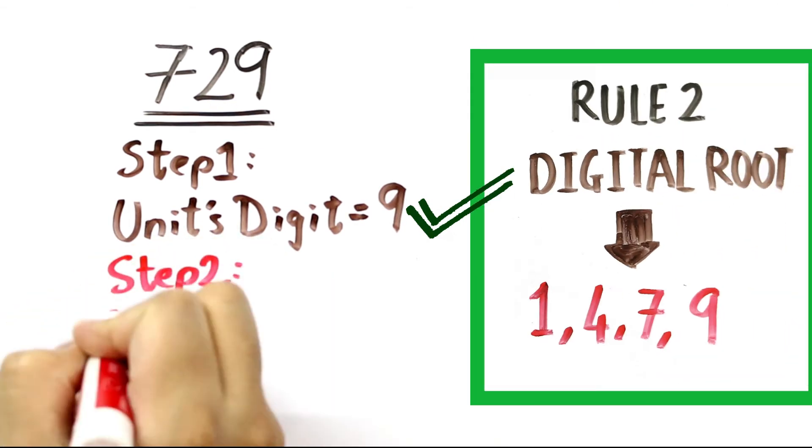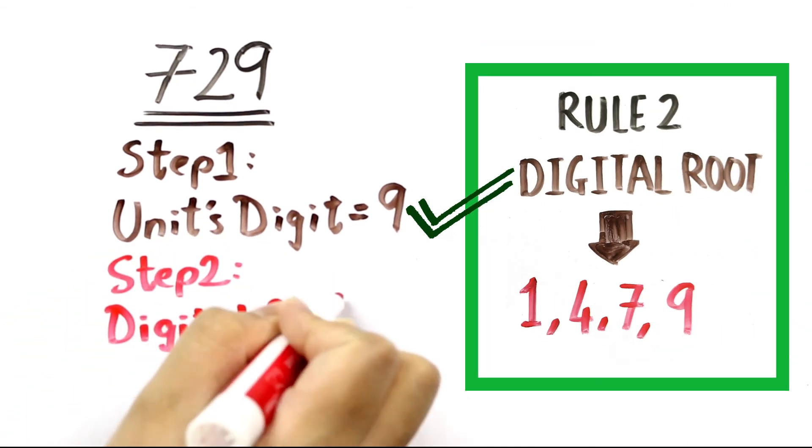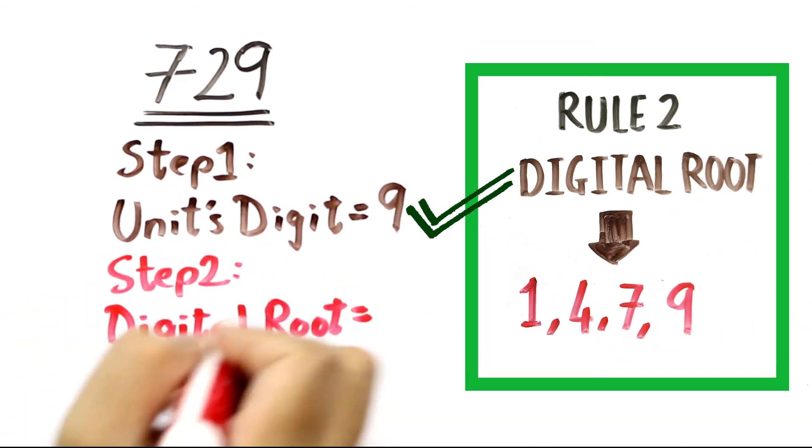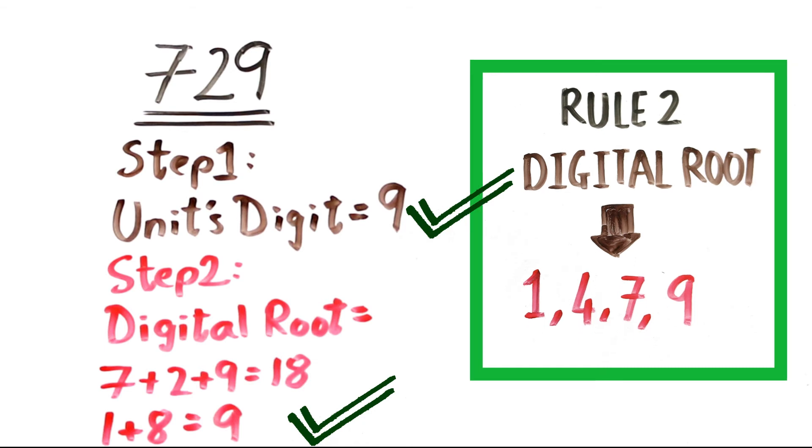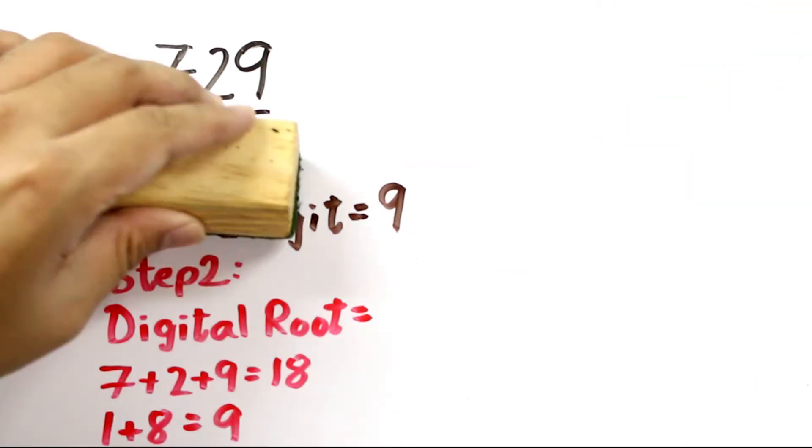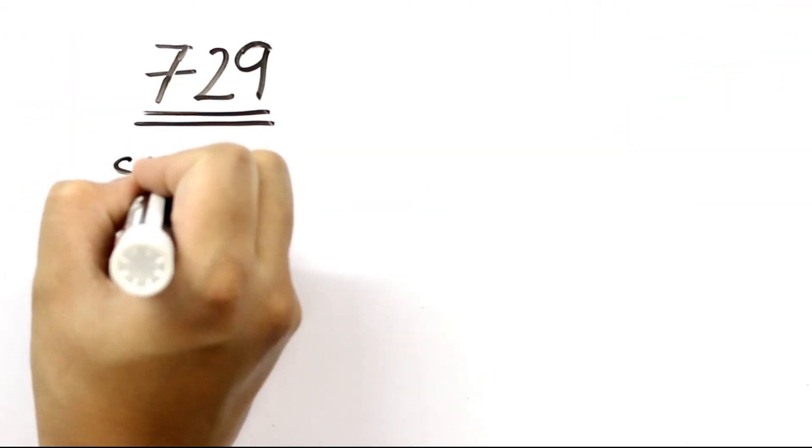Step 2 is to calculate digital root. So digital root of 729 equals 7 plus 2 plus 9 equals 18. And then we have to add 1 plus 8, so that is ultimately equal to 9. This also doesn't violate our condition, so we have to go for step 3 of finding prime factors.